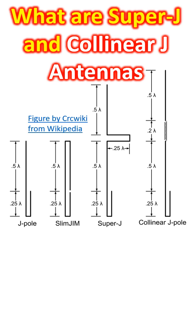What are Super-J and Collinear J antennas? They are variants of the J-pole antenna with higher gain, as they have an additional radiating element above the standard J-pole antenna with appropriate phasing arrangement to increase the gain.